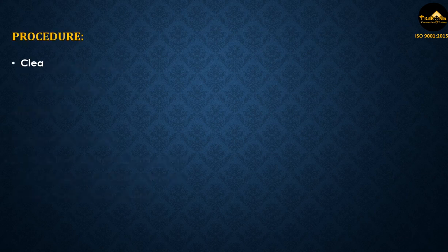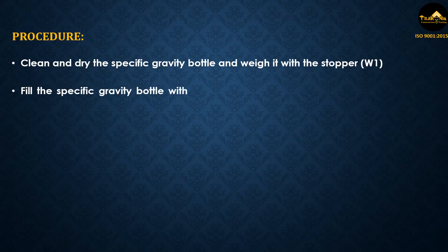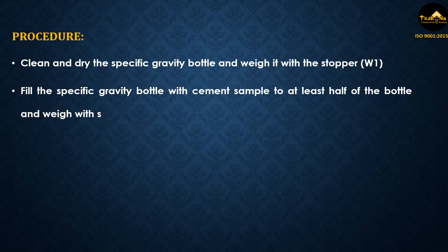Procedure: Clean and dry the specific gravity bottle and weigh it with the stopper (W1). Fill the specific gravity bottle with cement sample to at least half of the bottle and weigh with stopper (W2).